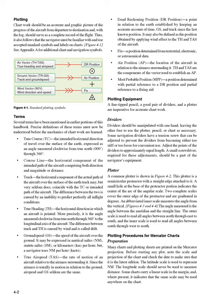Plotting chart work should be an accurate and graphic picture of the progress of the aircraft from departure to destination and, with a log, should serve as a complete record of the flight. Thus, it also follows that the navigator must be familiar with and use accepted standard symbols and labels on charts. See Figure 4-1 and Appendix A for additional chart and navigation symbols.